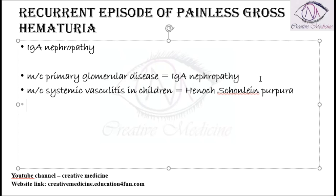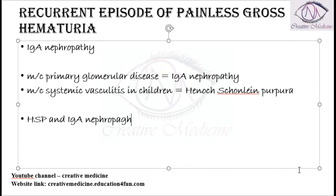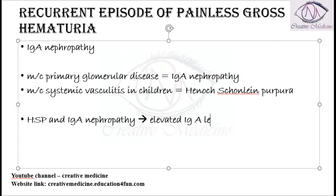One important thing to note is that Henoch-Schönlein Purpura and IgA nephropathy share one common feature: the presence of elevated IgA levels is common in both of these conditions.